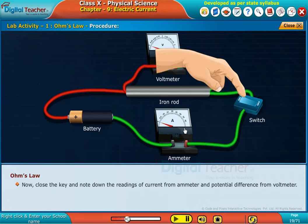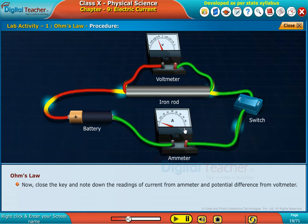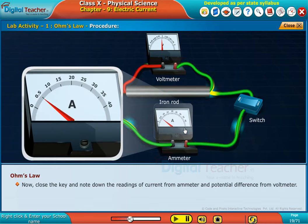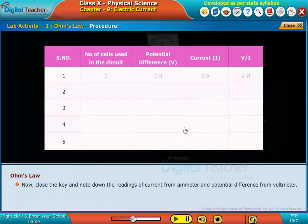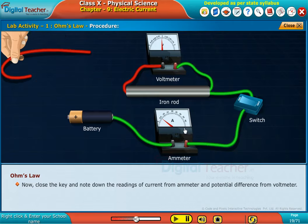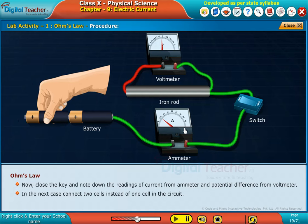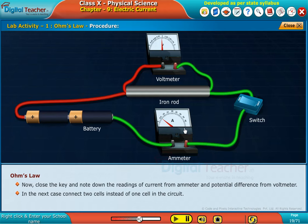Now close the key and note down the readings of current from ammeter and potential difference from voltmeter. In the next case, connect two cells instead of one cell in the circuit.